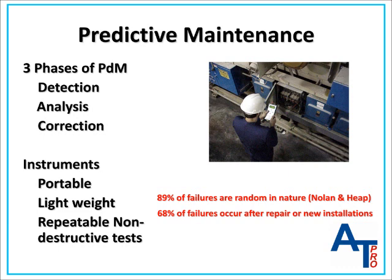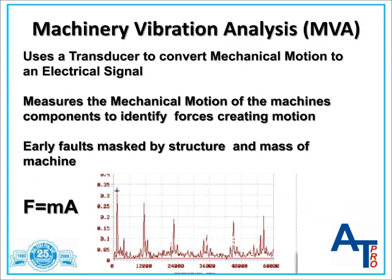Predictive maintenance instruments should be portable, lightweight, easy to use, and perform repeatable, non-destructive testing. There are many varying technologies and instruments that can perform this very important process. There is no single measurement or technology that provides insight into identifying 100% of developing machinery faults. Machinery vibration analysis has been an integral part in most successful plant reliability programs. It has proven to be a very important tool in identifying developing failures on rotating equipment for over 70 years.